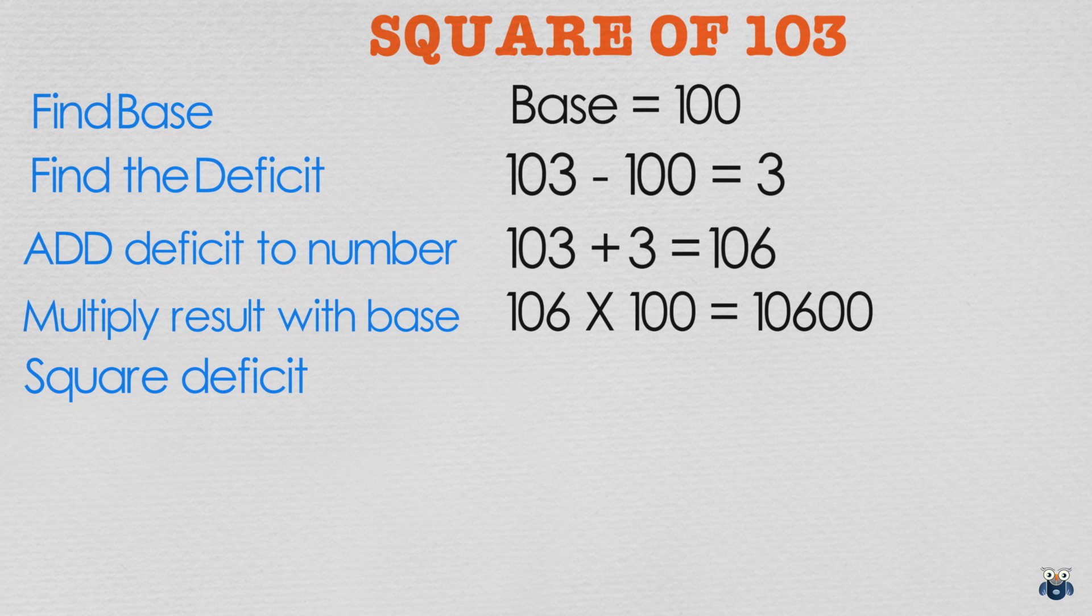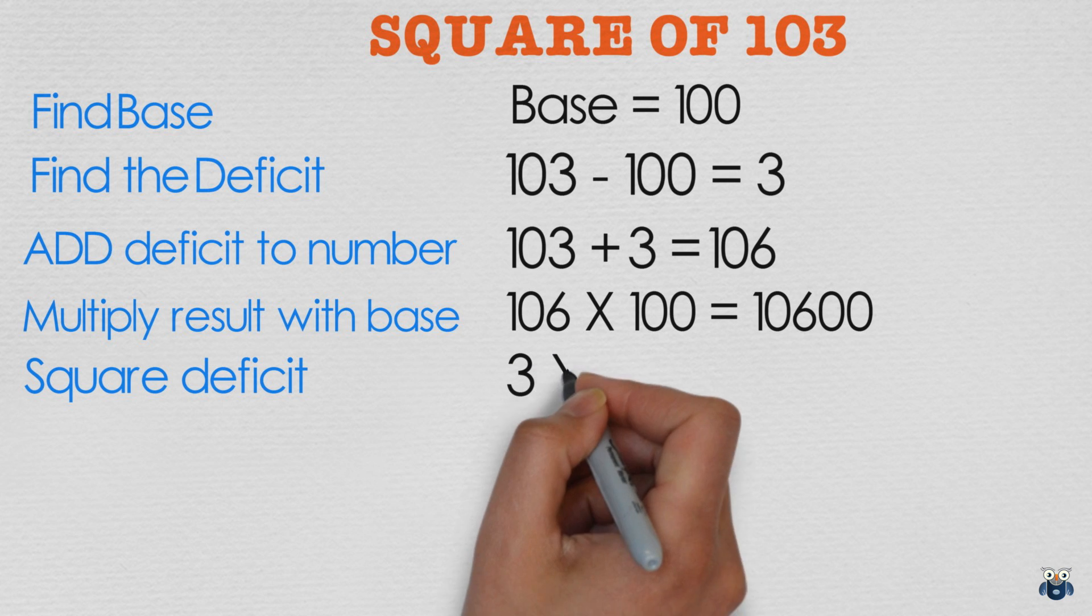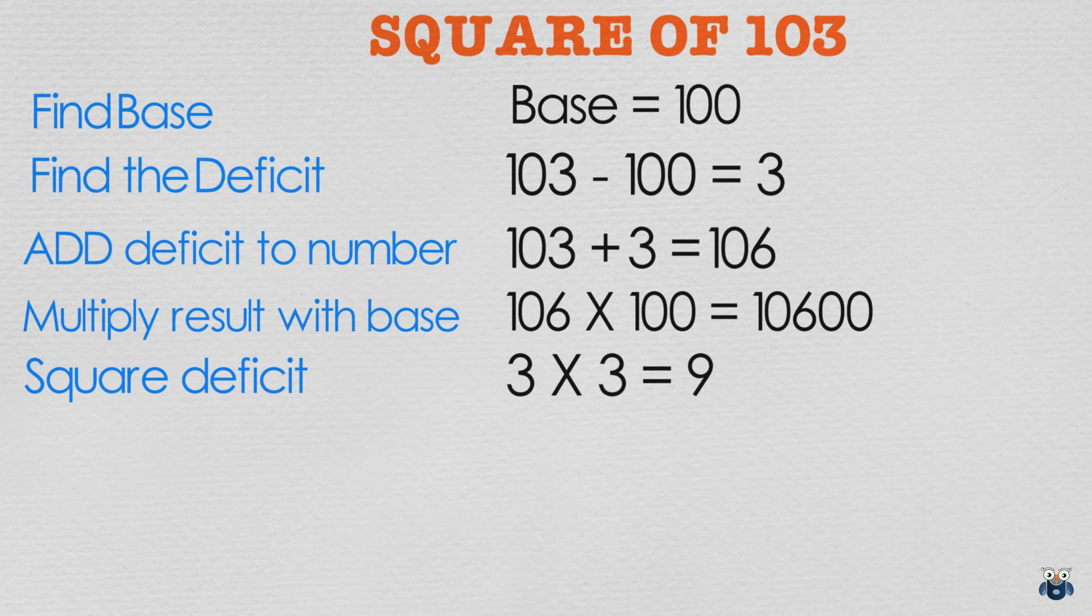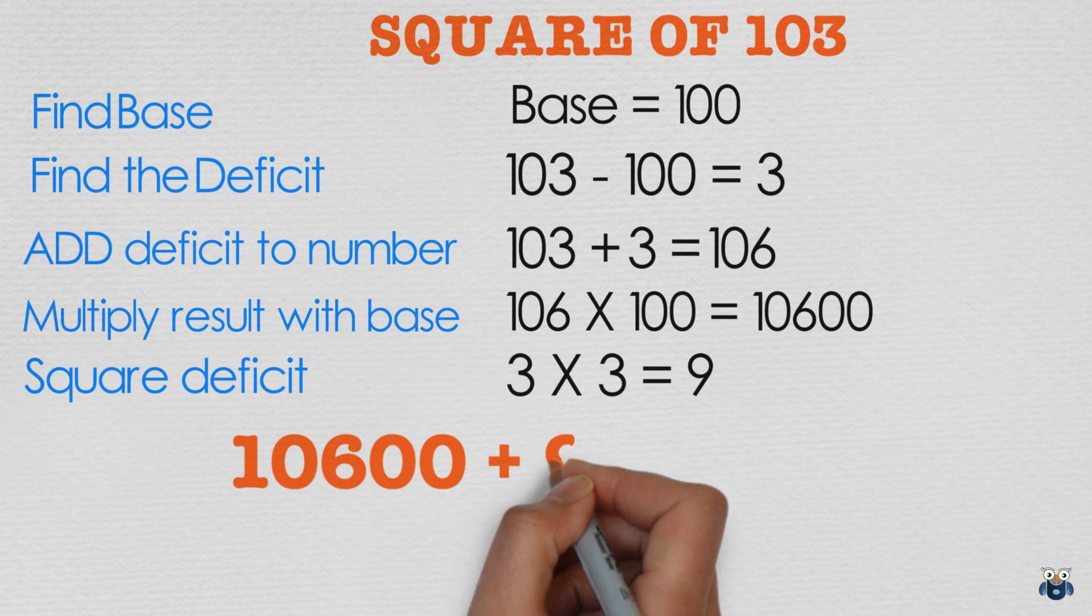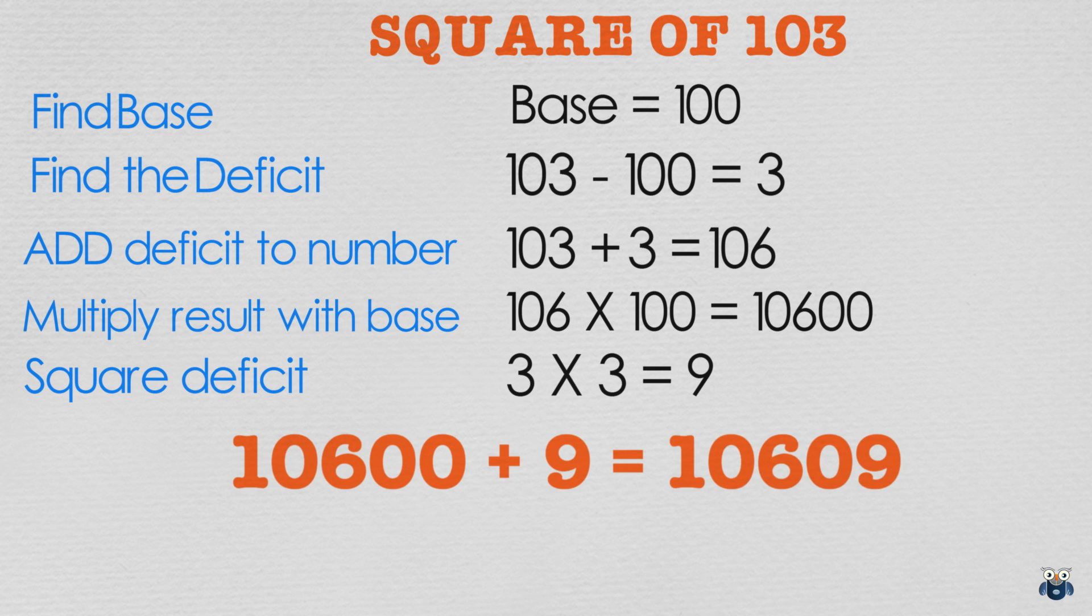We then square the deficit. 3 square is 9. And finally we add both results. 10600 plus 9 is 10609 our final answer.